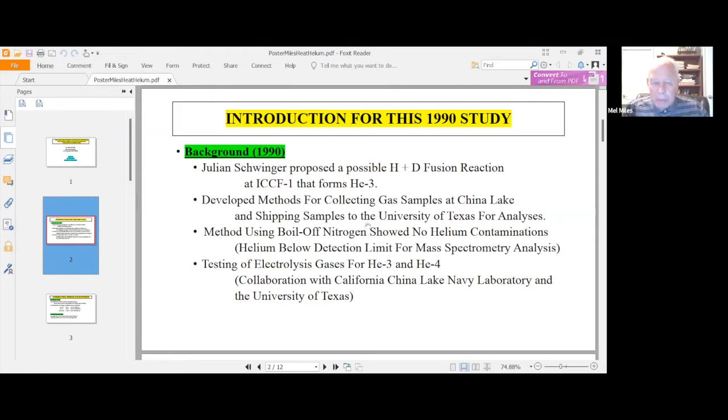It's the same method. But before we even got to studying the helium-4, we had to prove that we could fill flasks with boil off nitrogen at China Lake in California, ship them to Texas, and those samples did not show any helium-4 or helium-3, of course.